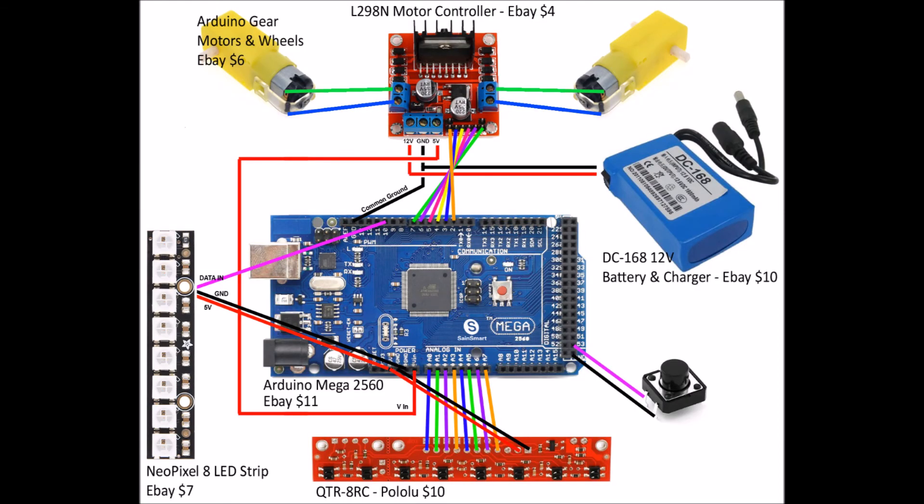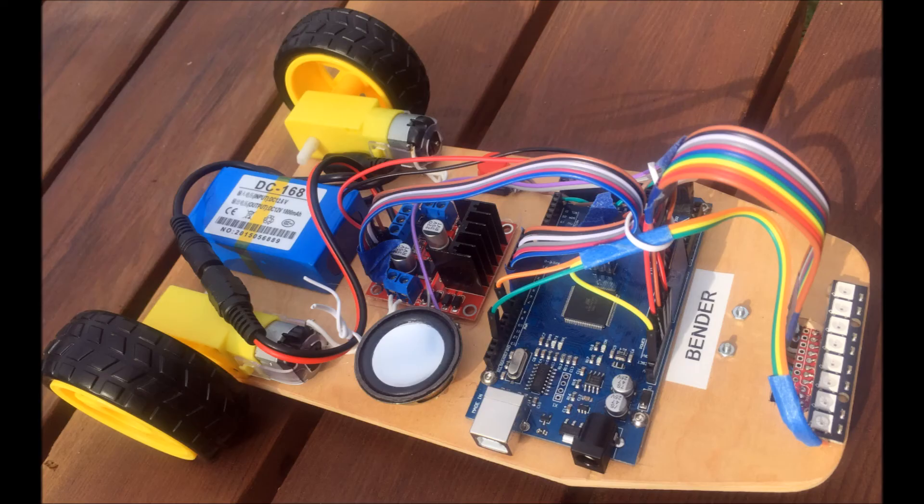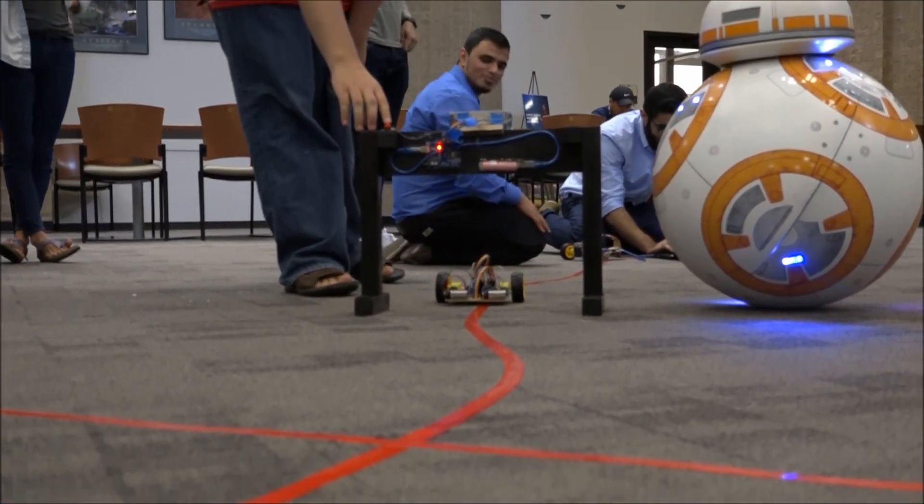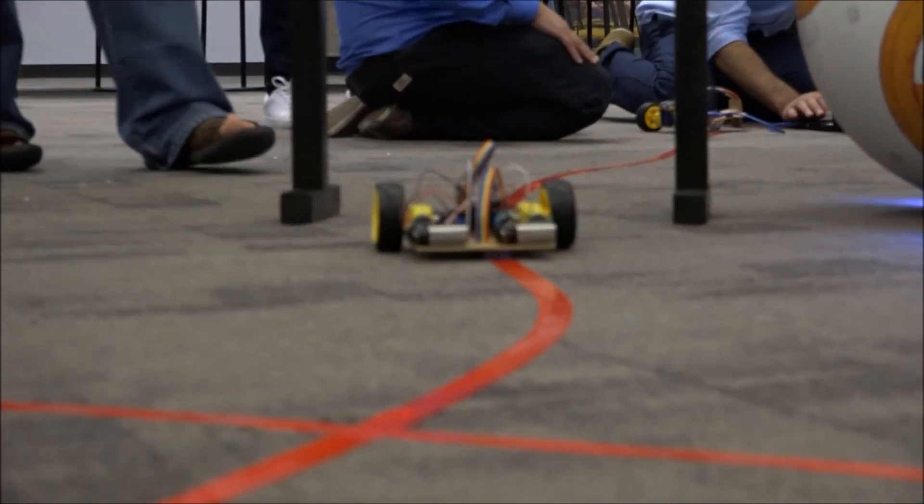You can find the schematic and parts list on the website. Now you can connect the rest of the parts. The push button, the motor controller, the motors, and the battery. The battery is necessary to power the motor controller so the motors won't run without it. After you connect the motor controller's five volt output to the volts in on the Arduino, then it will no longer need to be plugged into the computer to get power.